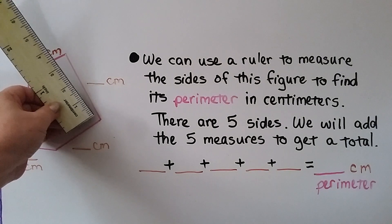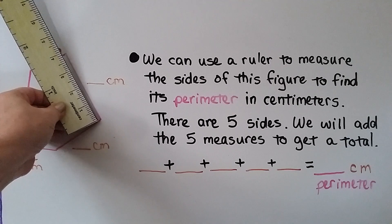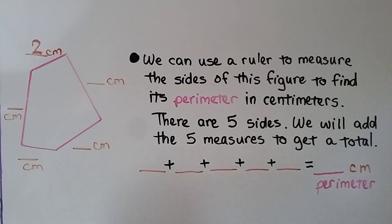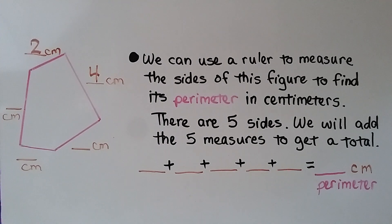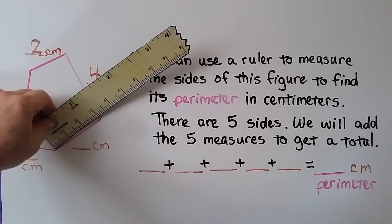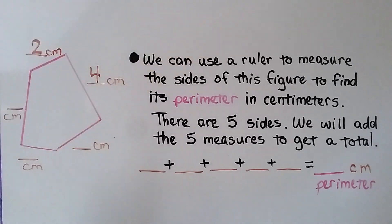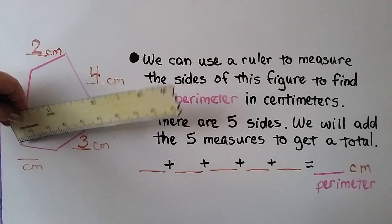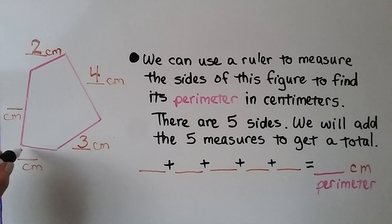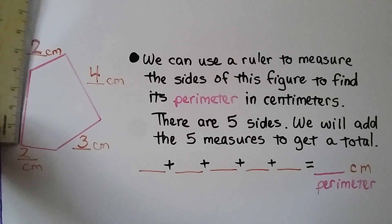We measure the next side — we put the corner at the end, lay the ruler along it, and we see it goes to the 4, so this side is 4 centimeters. We measure the next side, lining the corner up, and we see it's 3 centimeters. We measure this small piece, and we see it went to the 2, so that side is 2 centimeters. For the last side, we line the corner up and see it's at 4, so this side is also 4 centimeters.